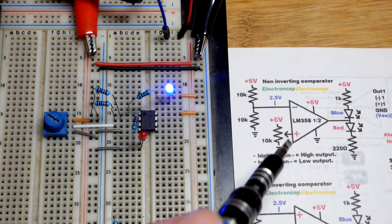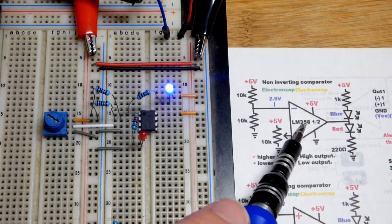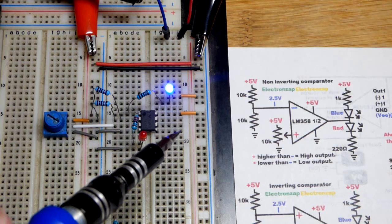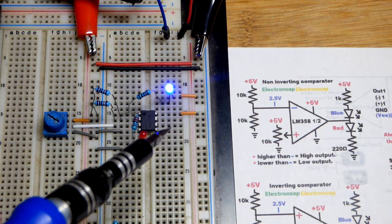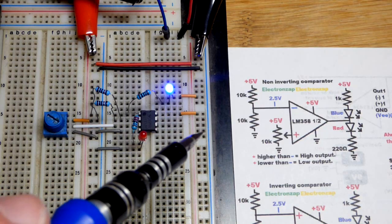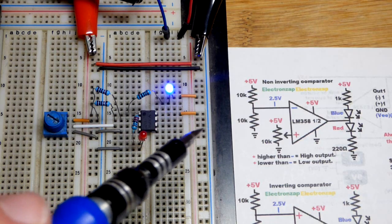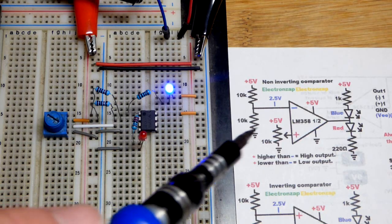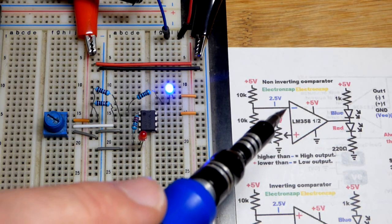In this video, we're going to look at the op-amp as a comparator. I'm using the LM358, one out of two of them. The one that you're not using, ideally you should set as a voltage follower, the non-inverting input connected to ground and then a voltage follower to keep the output to ground. But we're not going to worry about that in this video.